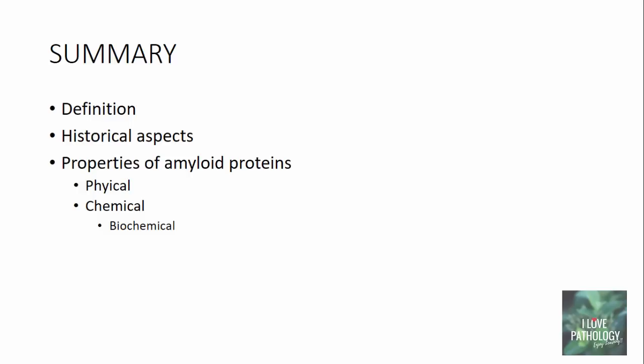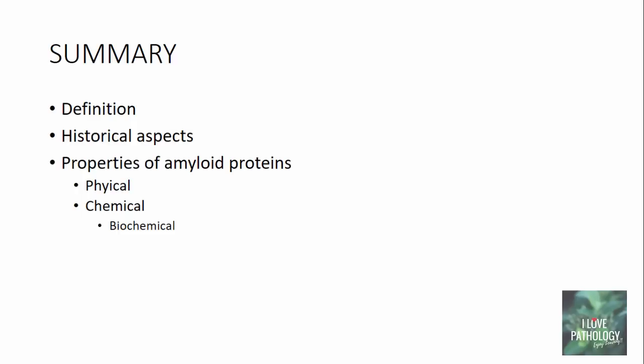In this tutorial, we defined what Amyloidosis is, looked into the historical aspects, and discussed in detail the properties of amyloid proteins. In the next part of this tutorial, we will talk about the pathogenesis of Amyloidosis and the classification of Amyloidosis, where we will also discuss in detail the different types of Amyloidosis.